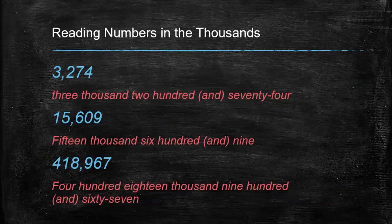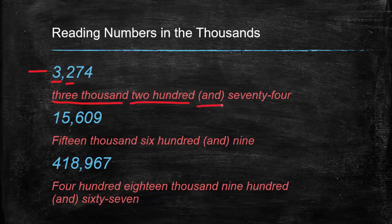Let's look at the first number. There's only one comma, so immediately I know it's in the thousands. There's only one digit here, so that's three thousand, and then two hundred and seventy-four — and 'and' is optional, you can say it or not. Three thousand two hundred and seventy-four.